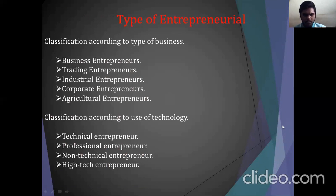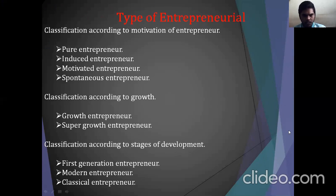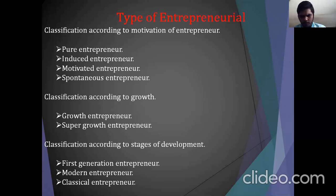Types of entrepreneur. The first classification is according to type of business: business entrepreneur, trading entrepreneur, industrial entrepreneur, corporate entrepreneur, and agriculture entrepreneur. The second classification is according to use of technology: technical entrepreneur, professional entrepreneur, non-technical entrepreneur, and high-technology entrepreneur. The third classification is according to motivation: pure entrepreneur, induced entrepreneur, motivated entrepreneur, and spontaneous entrepreneur. The last classification is according to stages of development: first-generation entrepreneur, modern entrepreneur, and classical entrepreneur.